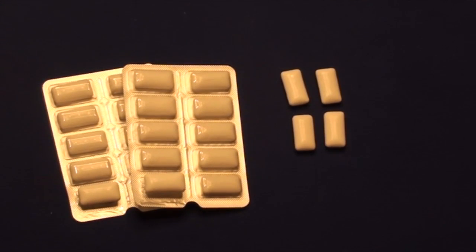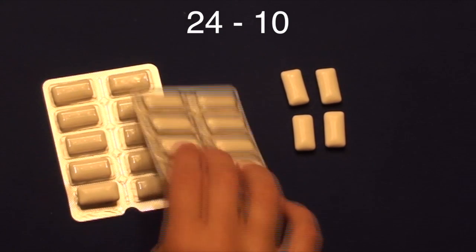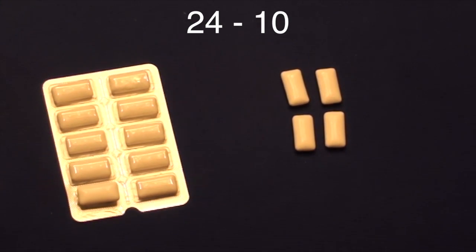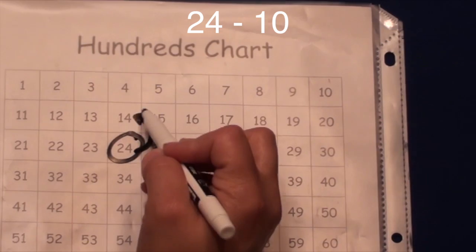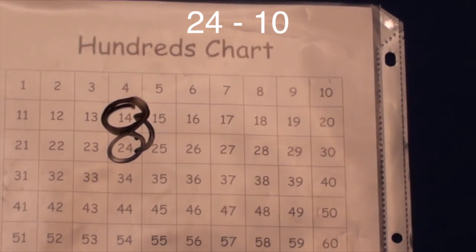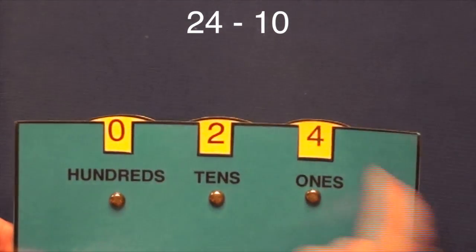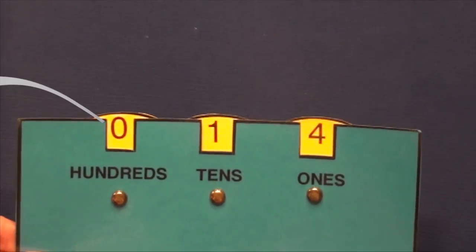10 less works in the same way, but instead of adding to the tens column, you subtract. Let's try 24 minus 10. When using the hundreds chart, I now go the opposite way on the chart because I am taking away. My answer will have a lower value. Here's what I picture in my head when solving. 24 minus 10 equals 14.